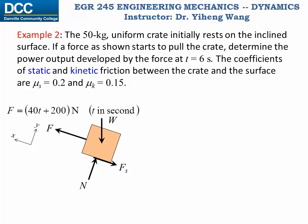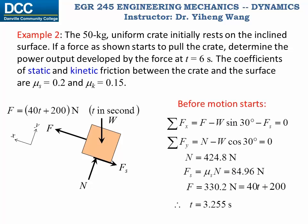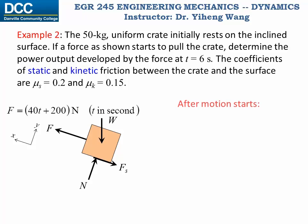We start with the free body diagram of the crate and determine at what time motion starts — that is, when the maximum static frictional force between the crate and surface is overcome. We use equilibrium equations for this step. Be careful with static frictional force: it is not constant and is always determined through equilibrium, so we do not apply the impulse-momentum principle while the crate is still static.